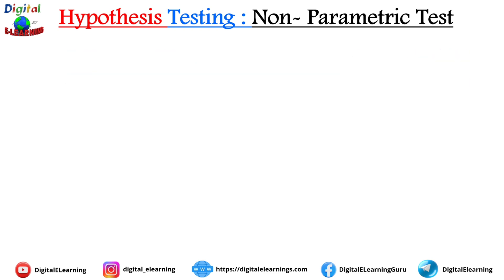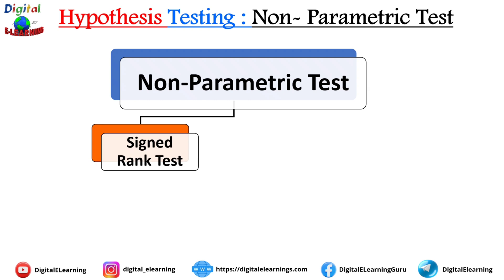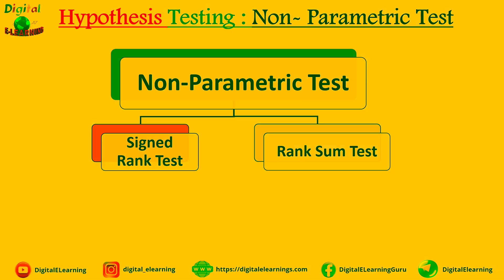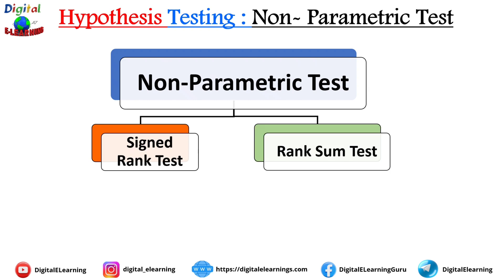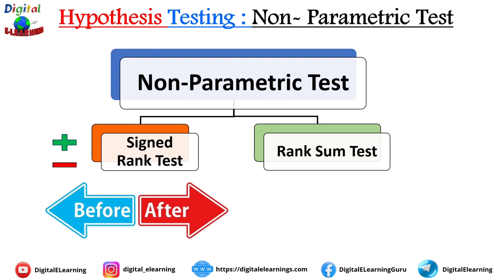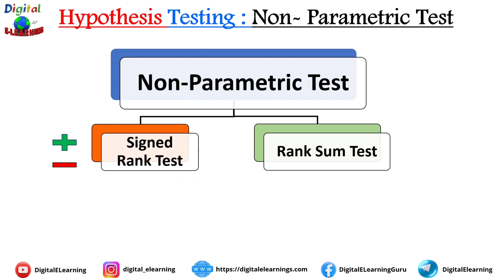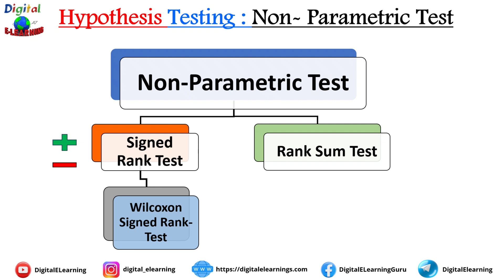Non-parametric tests are bifurcated into two categories: signed rank test and rank sum test. The signed rank test — meaning plus or negative — is used when you are working with paired data, meaning something is measured twice, just before or after a treatment. The most common example here is Wilcoxon's signed rank test.